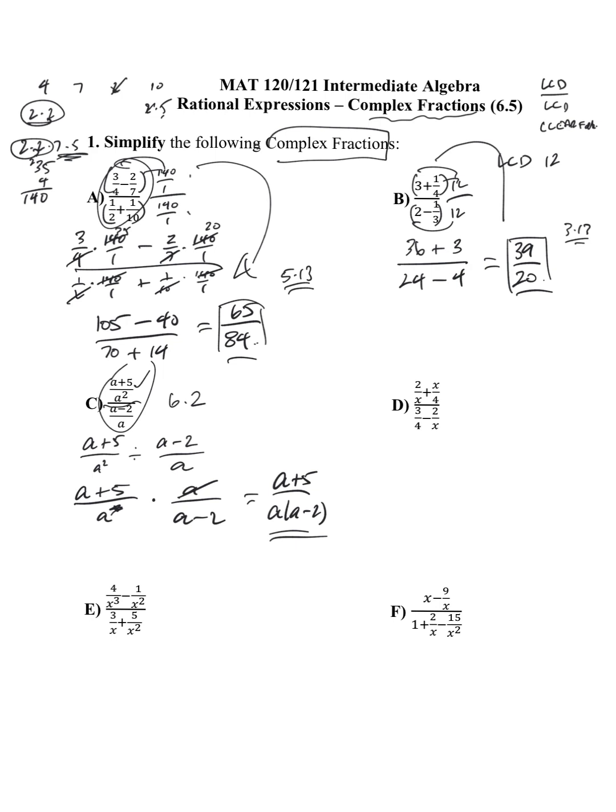D though, we're back to adding and subtracting. So we have to use our LCD trick. So in this case, it looks like the LCD is 4X. 4X on the top, 4X on the bottom. So I'm going to multiply the top by 4X, if you want to think of that as over 1, and multiply the bottom by 4X. And if you want to, 4X over 1. So again, I'm multiplying top and bottom by 4X. If we distribute,